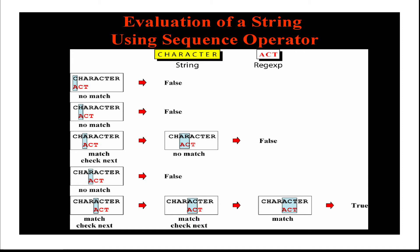In the fifth comparison, 'a' matches the next 'a' in the string. We then move to match the second character 'c', and after 'a' matches, 'c' also matches. Then we match the next character 't', and 't' also matches. So the pattern 'act' is found as a part of the string 'character', and we get the result as true. This is how the sequence operator works for matching a given pattern in a regular expression.